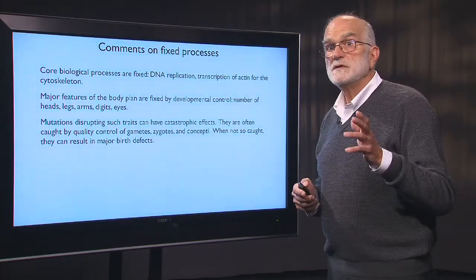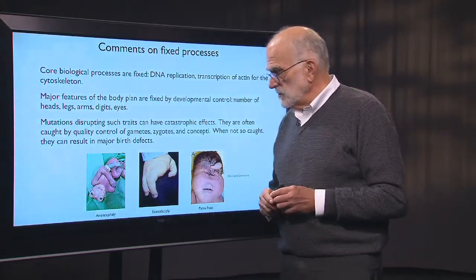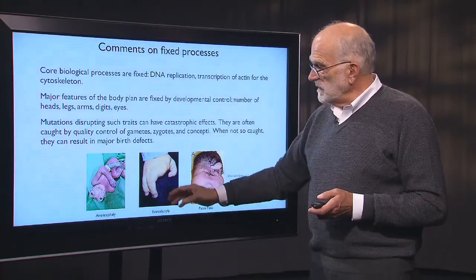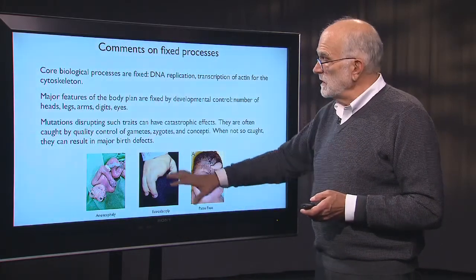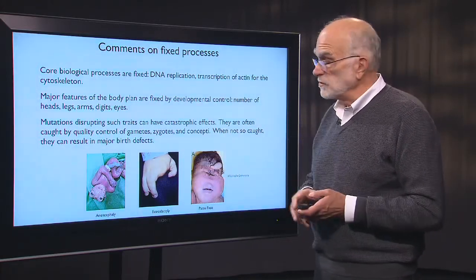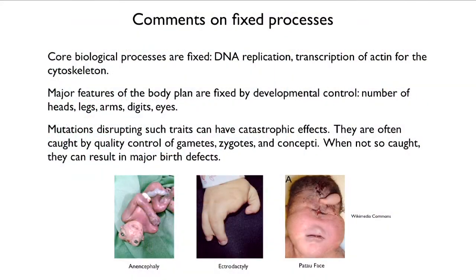These pictures are not pretty. Here are some major birth defects: a baby born without a brain — that's called anencephaly. Here is a child that survived with ectrodactyly — it is missing a few fingers. Here is a child dead at birth with what's called patau face: missing both eyes, appearing to have a proto-eye like a cyclops in the middle of the forehead. That is what happens when a mutation occurs in a developmental control gene.